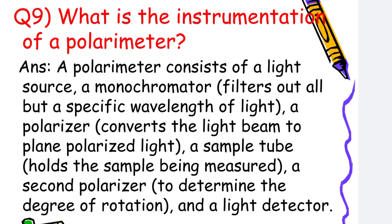A polarizer converts the light beam to plane polarized light, a sample tube holds the sample being measured, a second polarizer determines the degree of rotation, and a light detector.